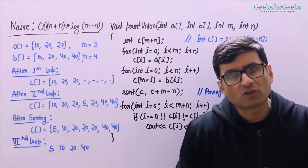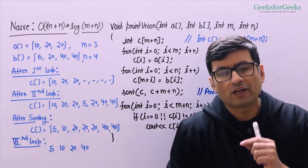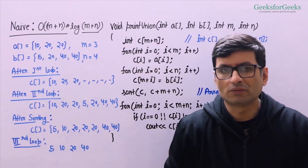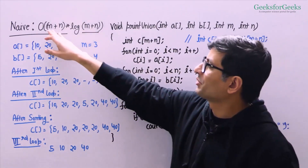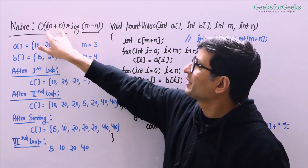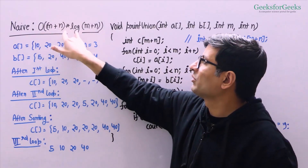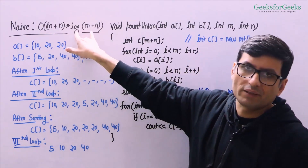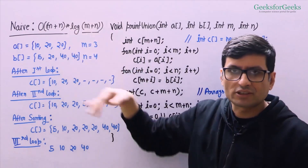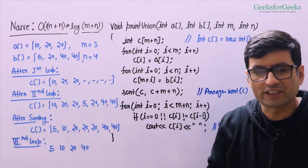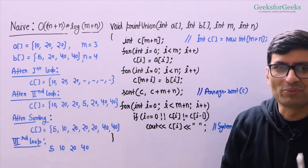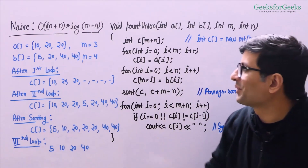Let's first talk about a naive solution to solve the problem. The time complexity of this naive solution is going to be O((m + n) log(m + n)), where m is the size of the first array and n is the size of the second array. We are going to use sorting here.